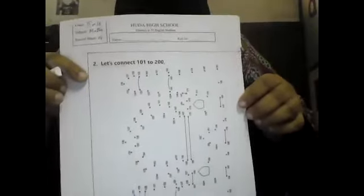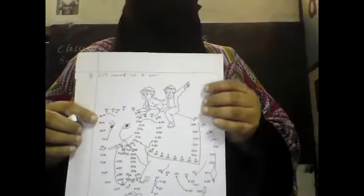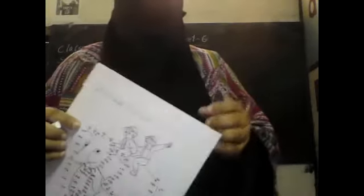Sorry. You have to complete this worksheet and do it in your notebook also. Just write the numbers - from 101 to 200 and 301 to 400. You should not draw anything. Only these numbers you have to write.